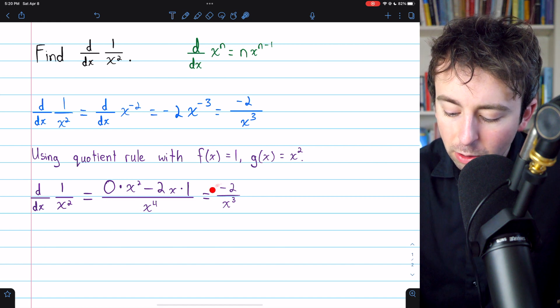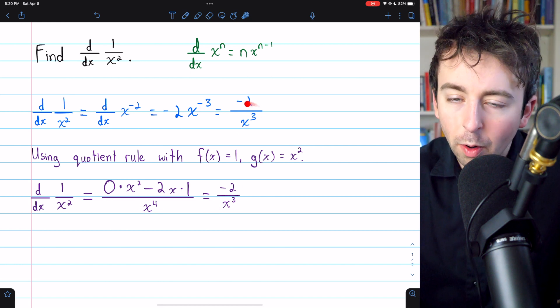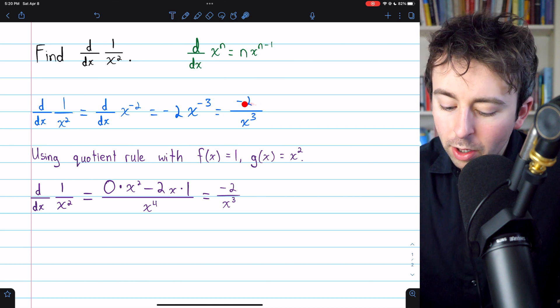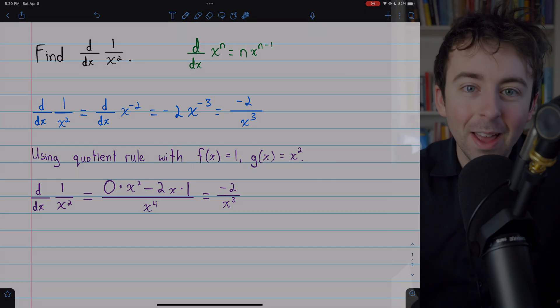And this turns out to, again, be negative 2 over x cubed. But once more, the power rule is a lot more slick, so just use that.